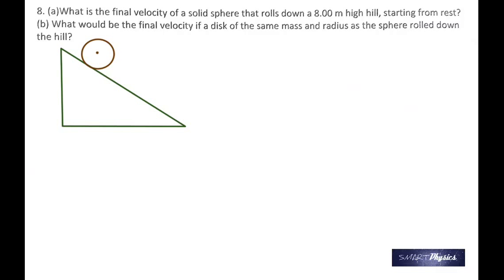What is the final velocity of a solid sphere that rolls down an 8 meter hill starting from rest? What would be the final velocity if a disk of the same mass and radius as the sphere rolled down the hill? The solid sphere rolling down has both rotational kinetic energy and translational kinetic energy. Because remember, its center is moving in a straight line, but it's rotating at the same time, so it has both.